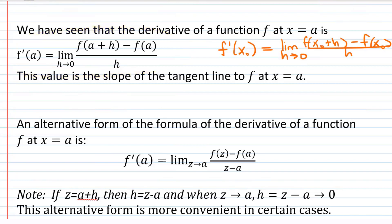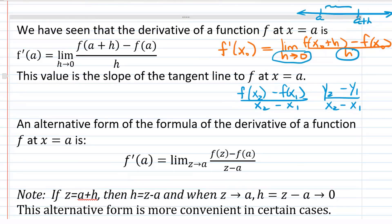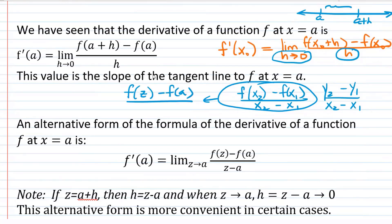An alternative to that is to leave it closer to the normal y2 minus y1 over x2 minus x1 format, except in function notation, which would be f of x2 minus f of x1 over x2 minus x1. I'm going to think of the slope in this format. However, instead of using x2 and x1, I'm going to use z and a. So it would be f of z minus f of a over z minus a. And when I do that, I want z to be getting closer to a.